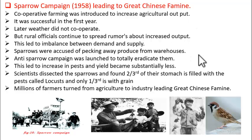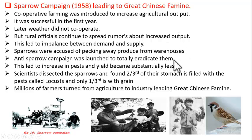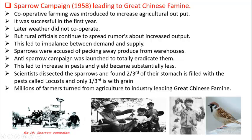They told the government that sparrows had eaten away the grain from the warehouses, and that was the reason for the decrease in agricultural output. After hearing this, the Chinese government ordered an anti-sparrow campaign to kill all the sparrows of the country. They even declared holidays for employees and school children to kill the sparrows. Following that order, the people of China formed rallies and started roaming the roads killing sparrows.